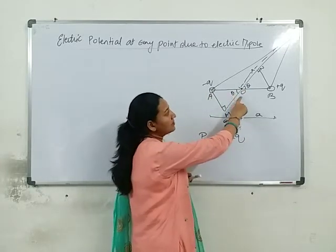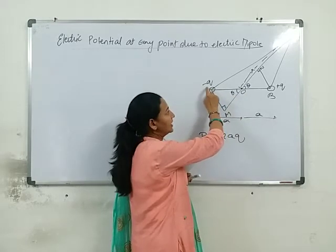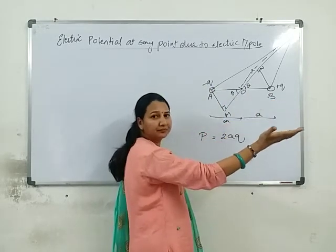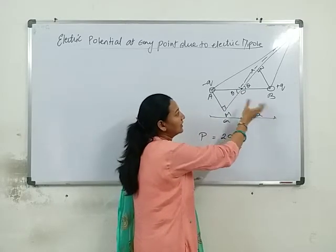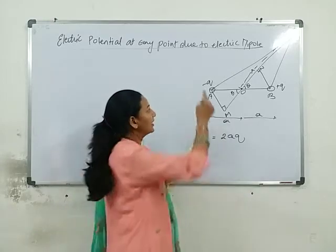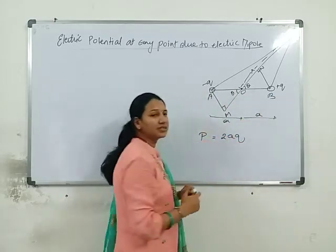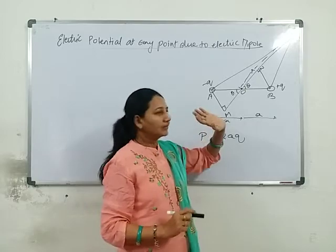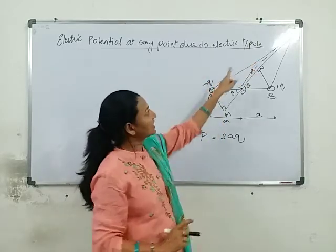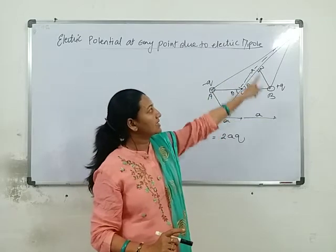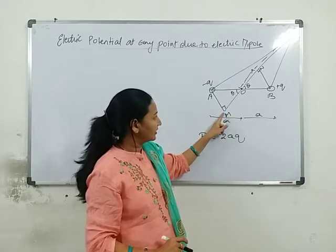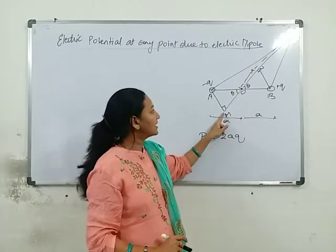When dipole comes, one charge is minus q and one charge is plus q. Then we have two charges and dipole. We have center O, and we need to find point P. We have to find A to point P and B to point P. Now we have to find the center line by joining the center.